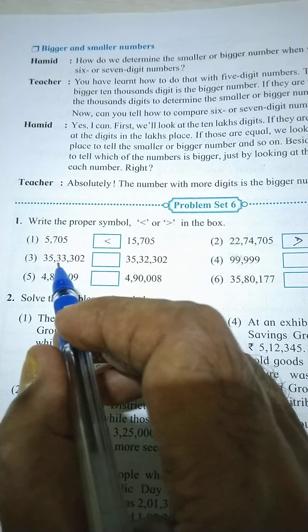Smaller or bigger in the box here. 5,705 is smaller than 15,705, like this.